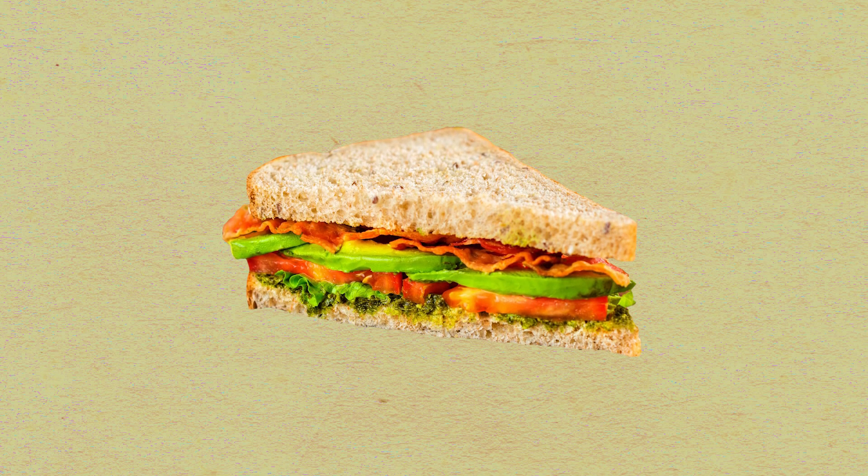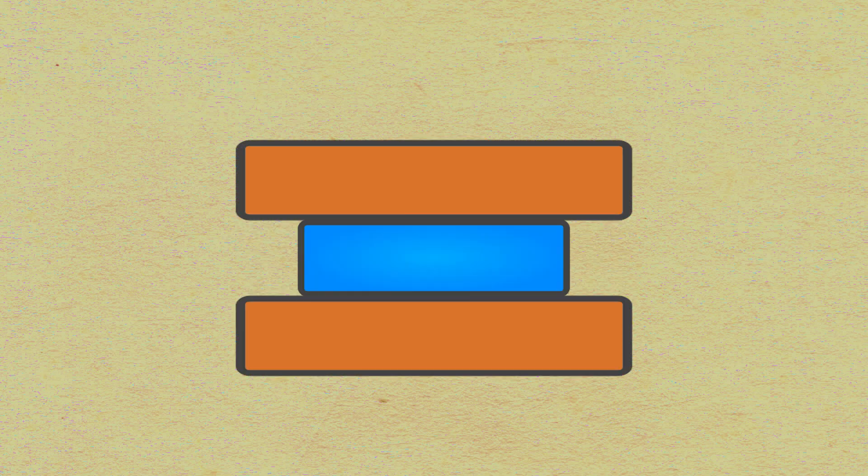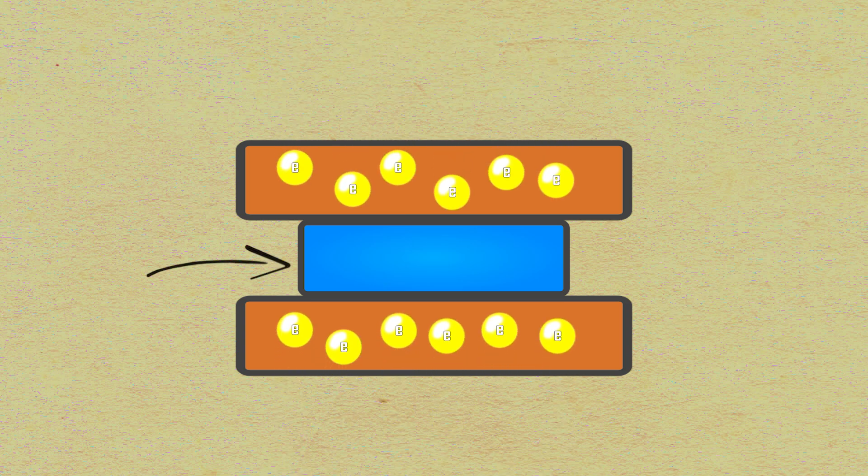As I just mentioned, a transistor is, simply put, a sandwich of semiconductors, usually made up from the receiver, the collector, and the base in the middle. These two elements have lots of free electrons in them, unlike the base.